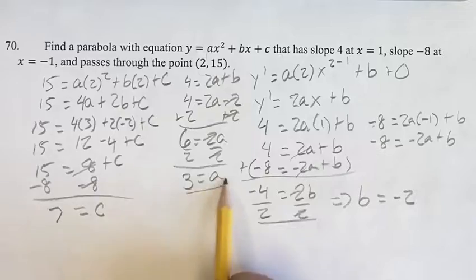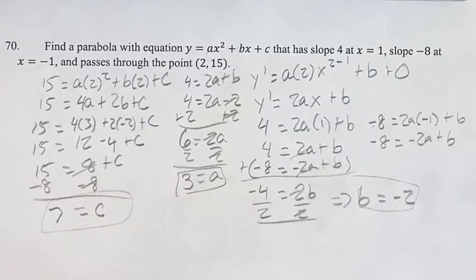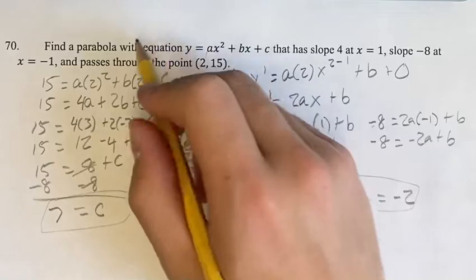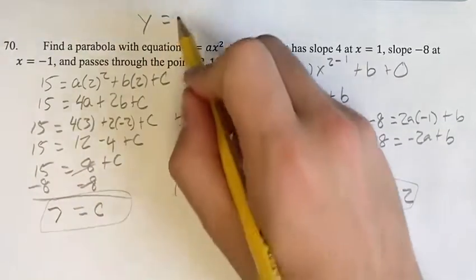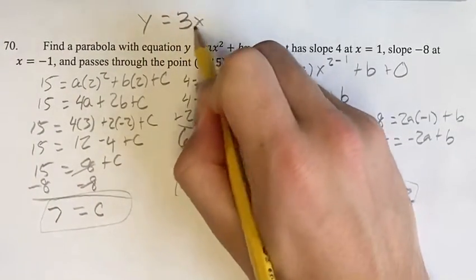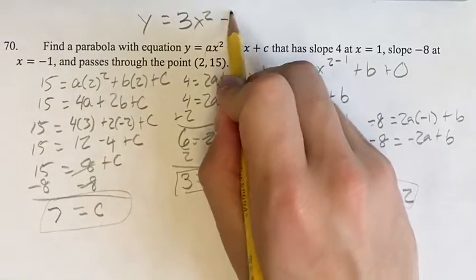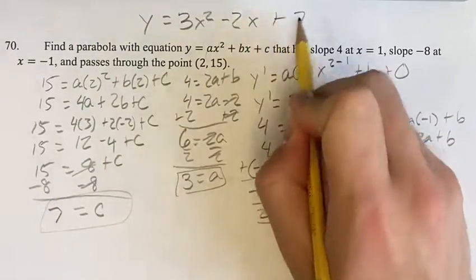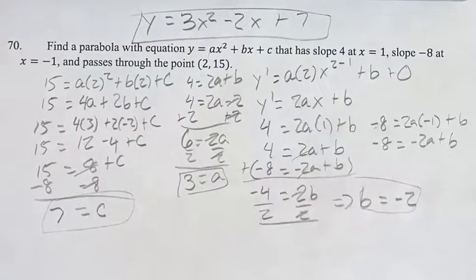So now we have a, b, and c. Therefore, y equals ax squared plus bx plus c is y equals 3x squared minus 2x plus 7. That's our final answer. As always, thank you for liking and subscribing, and I'll see you in the next video.